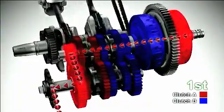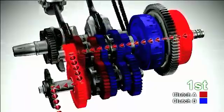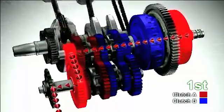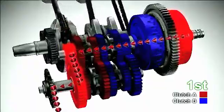The vehicle is now driving in 1st gear. Clutch A for odd numbered gears is engaged and transmits the driving force. Clutch B for even numbered gears is disengaged to keep the gears in neutral.